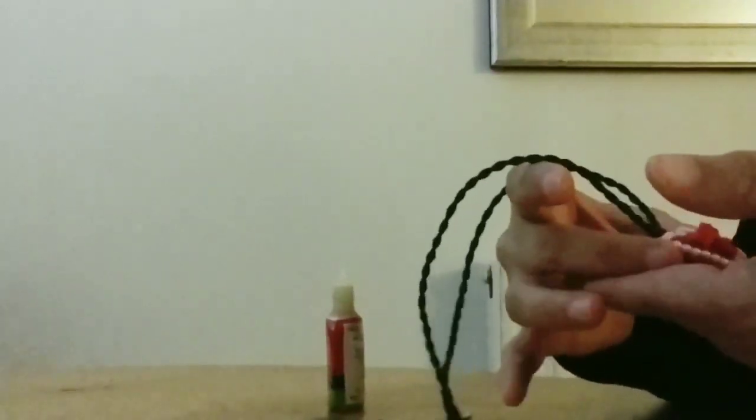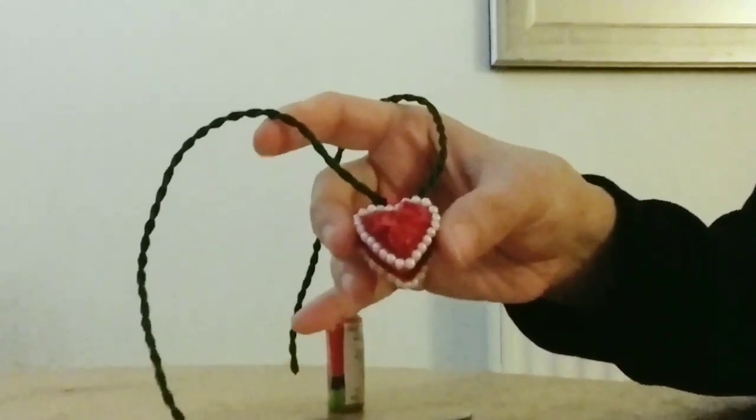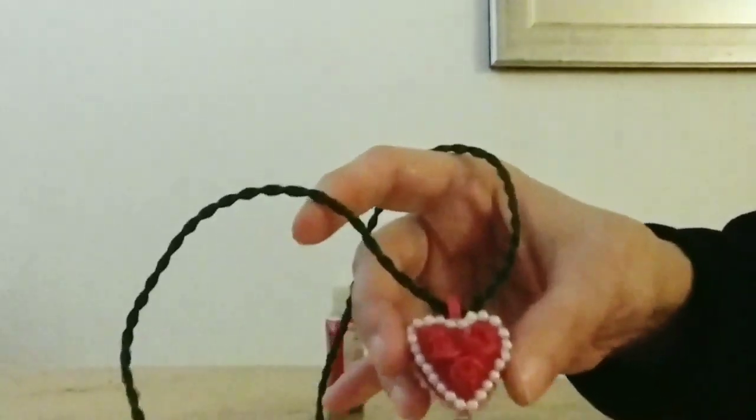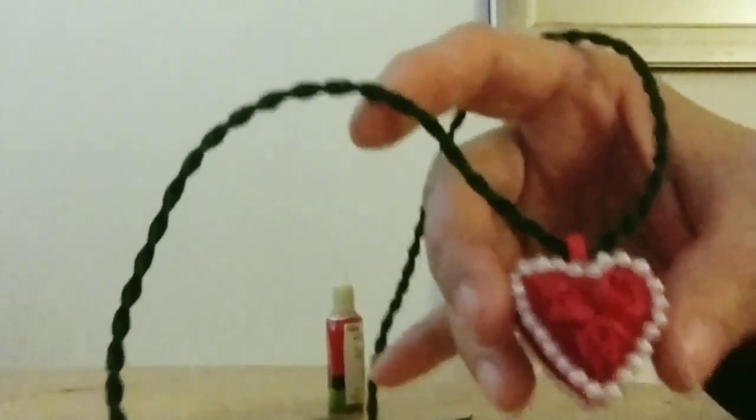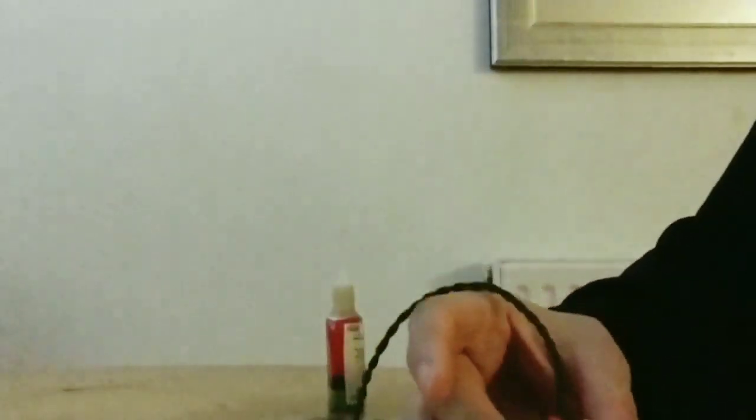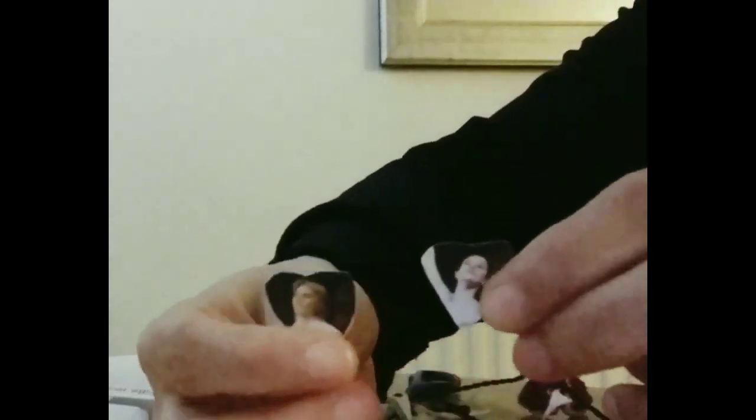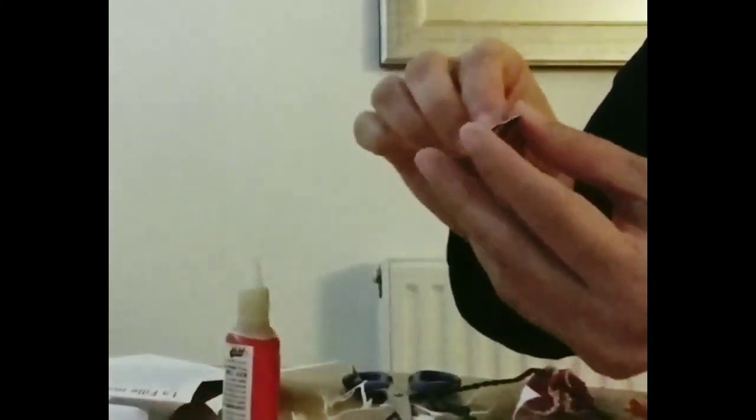And now my locket is almost complete. The only thing missing is the photograph. For that I will be cutting 2 heart shaped photographs which are smaller than the size of the heart of the locket. I will glue the photographs and stick them inside the locket.